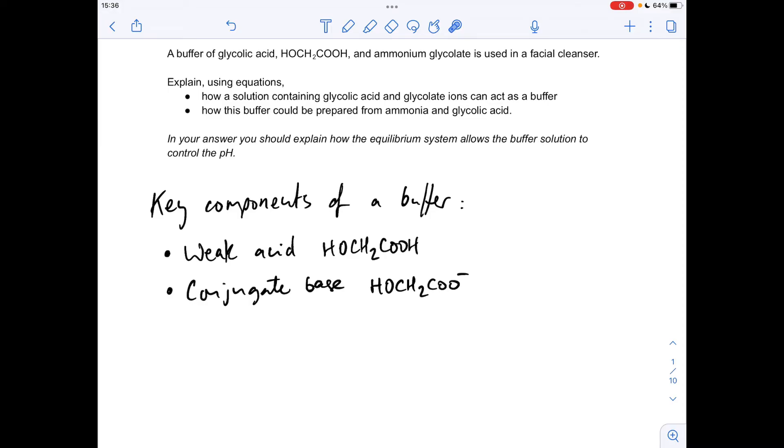Moving on to the second bullet point now, we've got to explain how this buffer can be prepared from ammonia and glycolic acid. Remember, we're after the glycolic acid and the glycolate ions being present in the same solution. The way you do that is you would take an excess of the acid and neutralize it, obviously partially, with the ammonia.